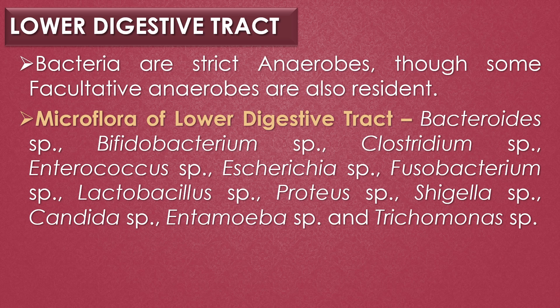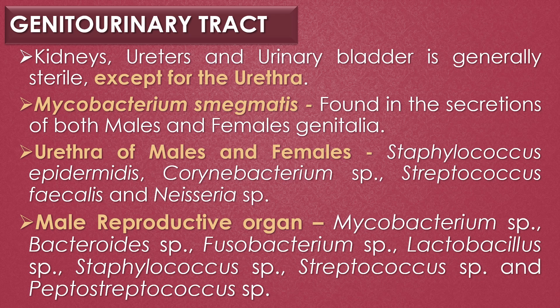The bacteria of the lower digestive tract are mostly strict anaerobes, though some facultative anaerobes are also resident. The microflora of the lower digestive tract includes Bacteroides, Bifidobacterium species, Clostridium species, Enterococcus species, Escherichia species, Fusobacterium species, Lactobacillus species, Proteus species, Shigella species, the yeast Candida species, and the protozoans Entamoeba species and Trichomonas species.